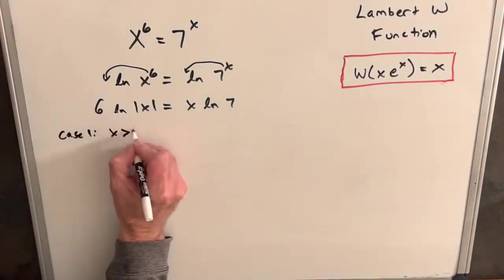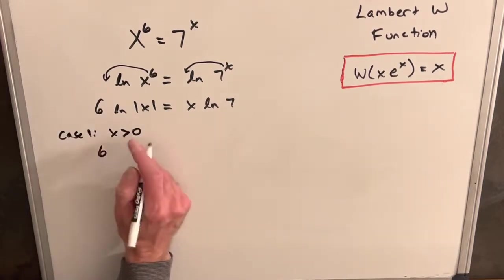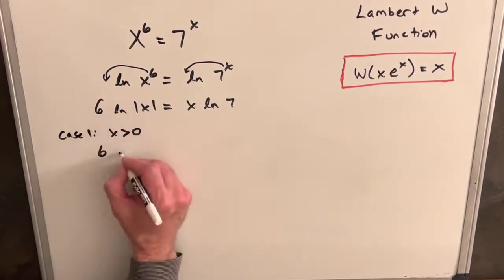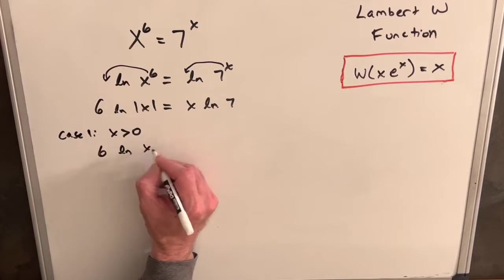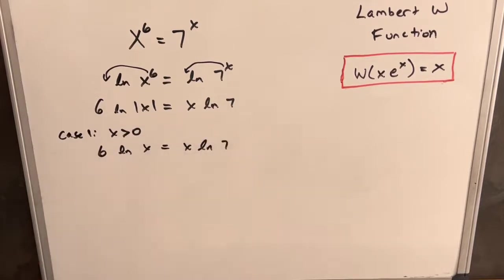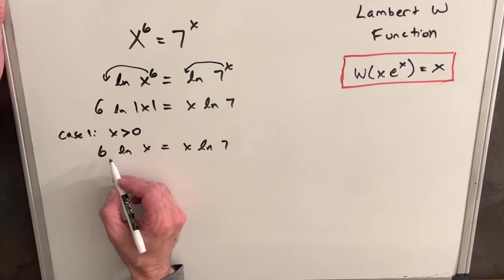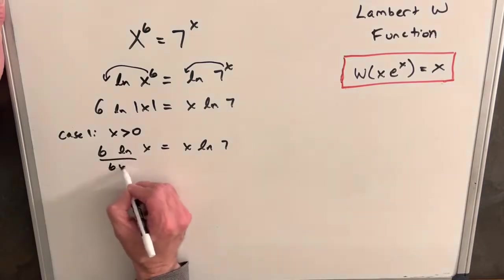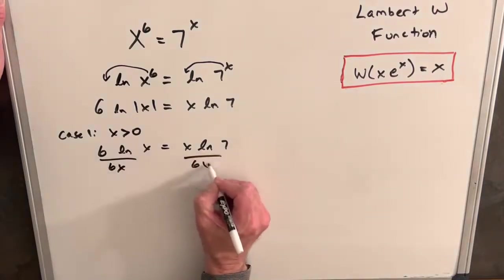We'll start with Case 1: x is greater than zero. Knowing x is positive, we can remove the absolute value sign, giving us 6 ln x = x ln 7. Now let's divide each side by 6x.